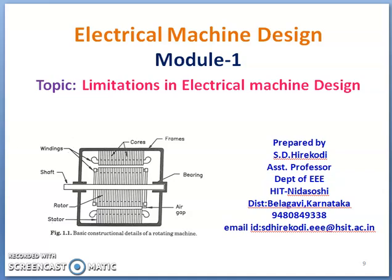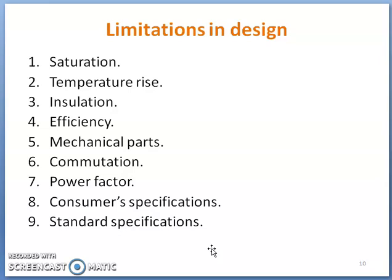Dear students, in the previous lecture we discussed some fundamental aspects of electrical machine design. We covered the major considerations to evolve a good design, and the different circuits used to build the structure of rotating electrical machines — magnetic circuit, electric circuit, dielectric circuit, thermal circuit, and mechanical parts. Next, let us discuss the limitations in electrical machine design.